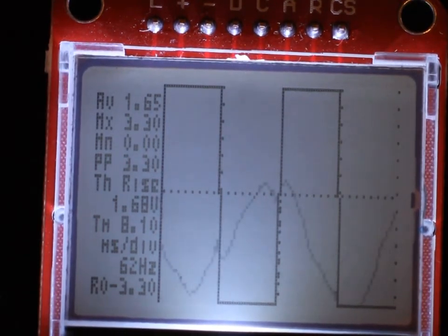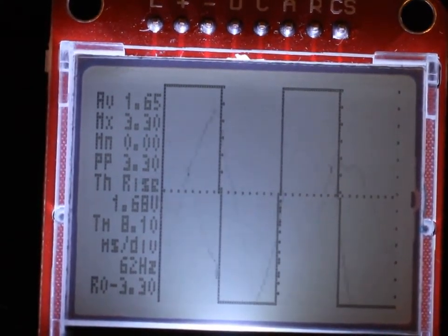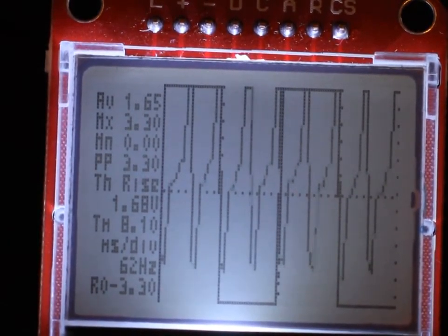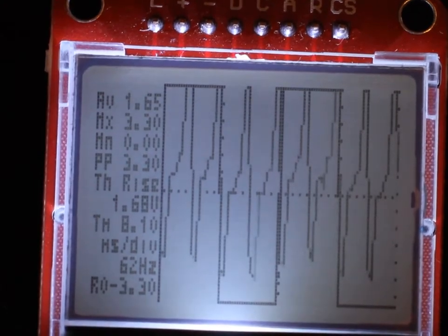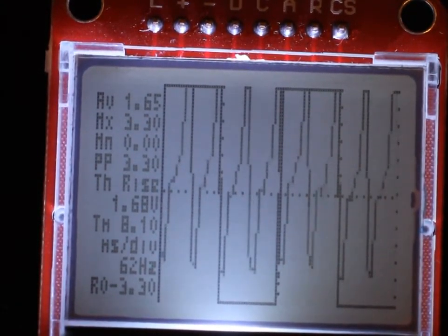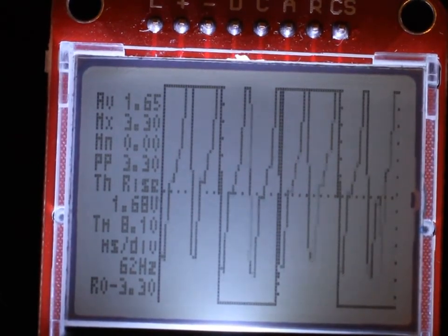But if I take my finger and use the probe to create an RC network with my body and then touch one of the higher frequency outputs for that slave Arduino, you should see, there we go, that now I'm basically plotting the capacitance characteristics, creating an RC network with my body with a higher frequency input in this case.